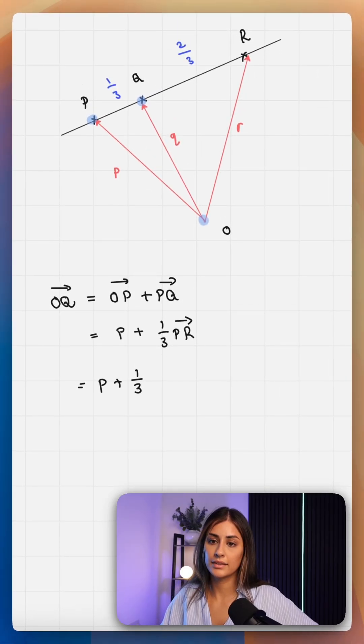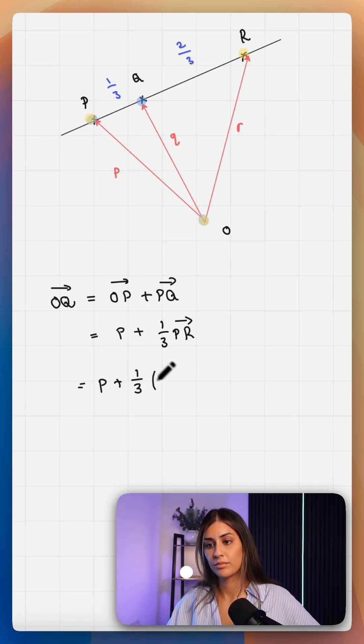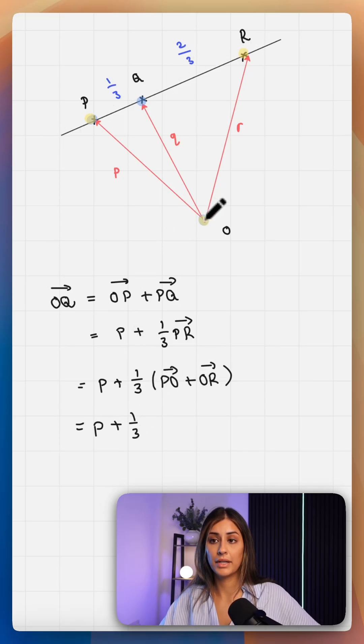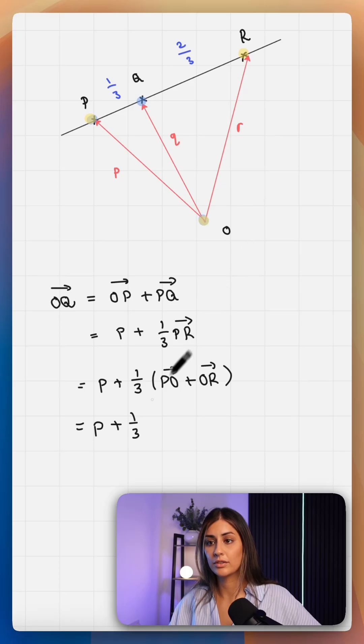Okay, to go from P to R, we can start at P and then we can go from P to O plus O to R. P to O is minus P and O to R is R.